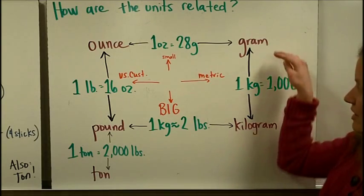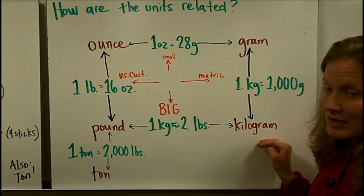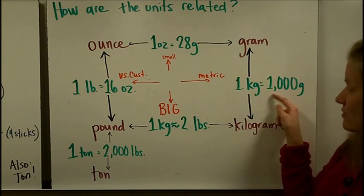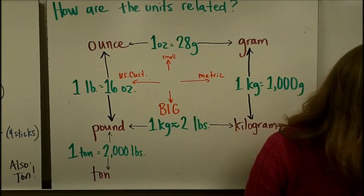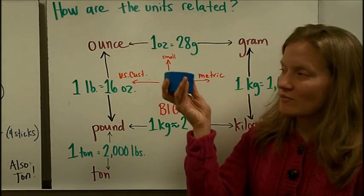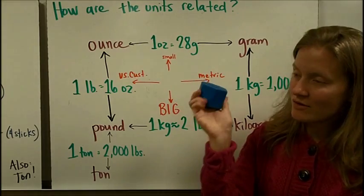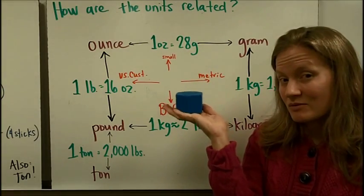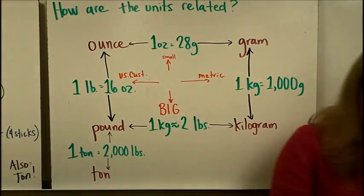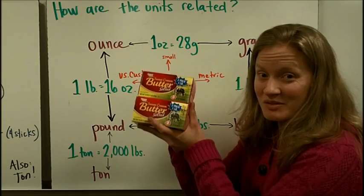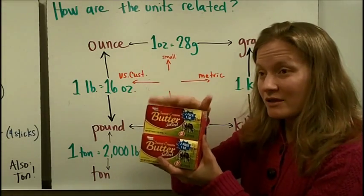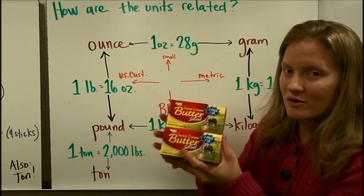Next, how grams and kilograms are related: one kilogram equals 1,000 grams. So if we were thinking about how many paperclips equal a kilogram, it would be 1,000. You could also say it would take about 1,000 paperclips to equal the weight of the kilogram benchmark — two boxes of butter.